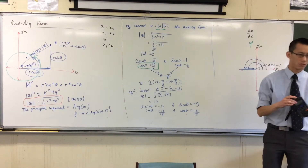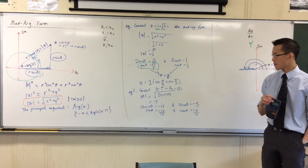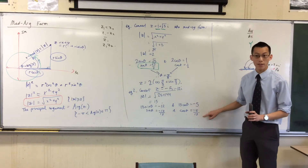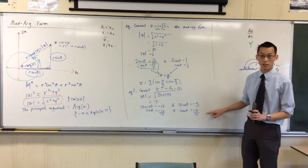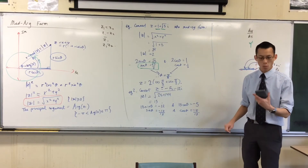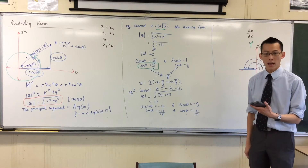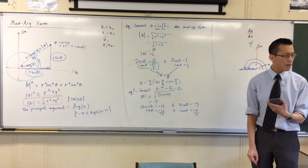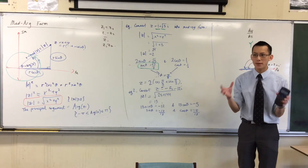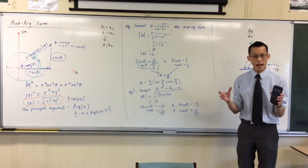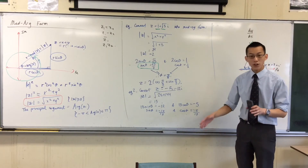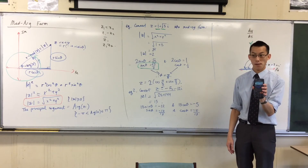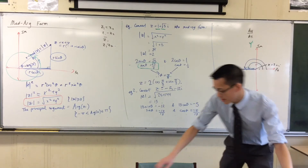What angle does cos inverse of −5/13 give you? It's giving about 1.96 — so 1.96 radians. Now there's a little bit of a problem with 1.96. Where is 1.96? We're not that familiar with our domains, but I've gone to the second quadrant.